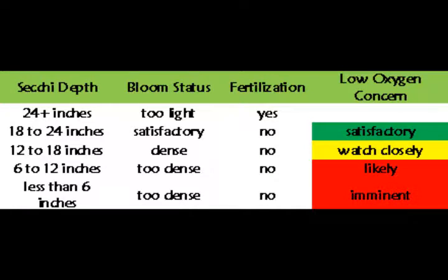In our pond in a bucket, our secchi depth was measured to be around 8 inches. This table correlates the secchi depth reading with the bloom status, the need for fertilization, and the risk of a low oxygen event in our pond.